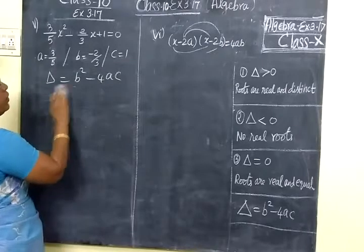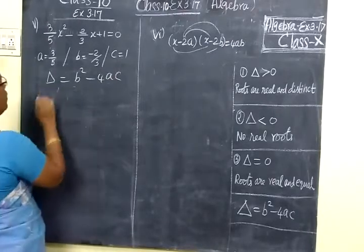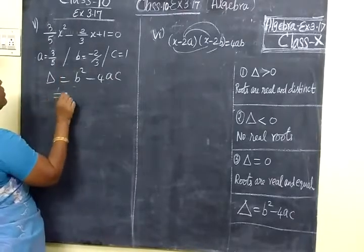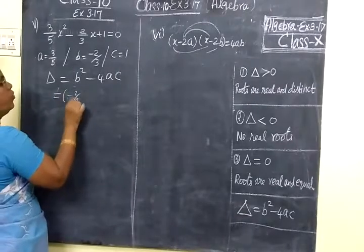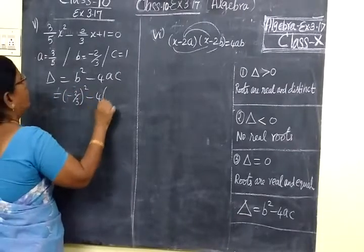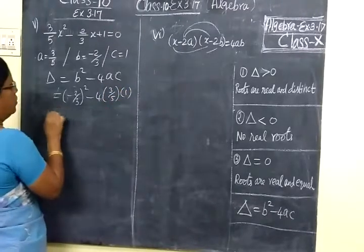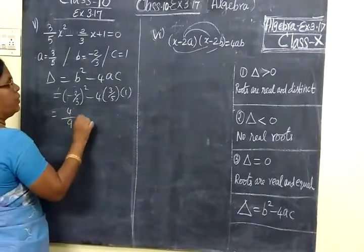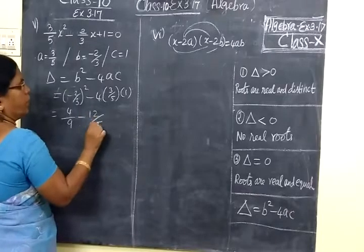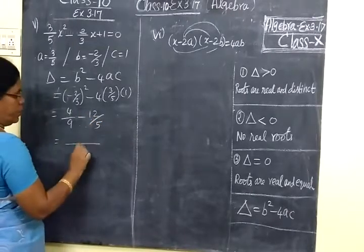Now we are taking delta equals b² minus 4ac. The value is (-2/3)² minus 4 times a which is 3/5, times c value 1.